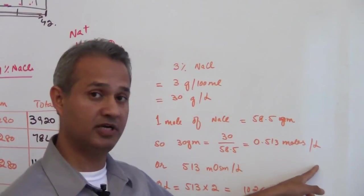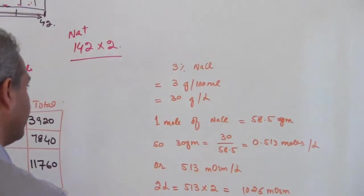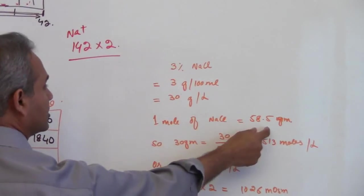So 0.513 moles per liter which is sort of half molar solution as I said before, see this is about 60 and this is 30.